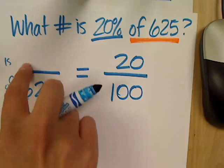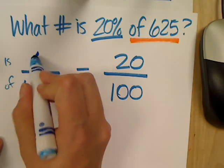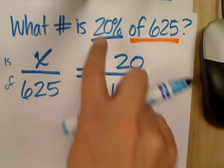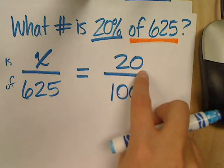And so, the only value I don't know is this is value, the part. So, that can be X. Would it be 20%? No, because remember, I've used this 20% over here.